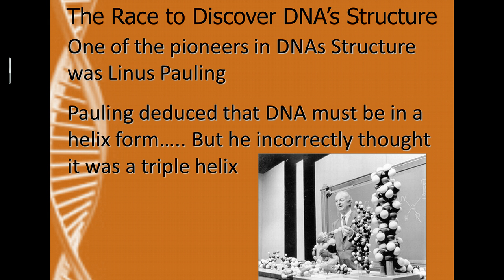As scientists began the race to figure out the structure of DNA, one of the early pioneers was American scientist Linus Pauling. Pauling was working with various proteins and noticed that many had a helical shape, so he wondered if DNA shared this same basic structure. As he tried to model DNA, he thought it was actually a triple helix. Unfortunately, that was incorrect — he didn't have enough information to deduce the actual structure of DNA.